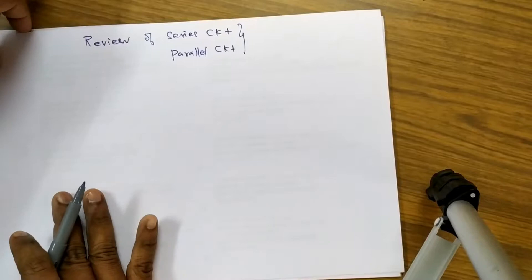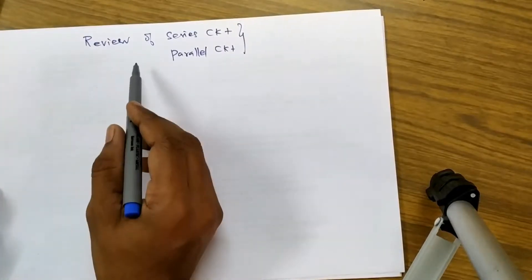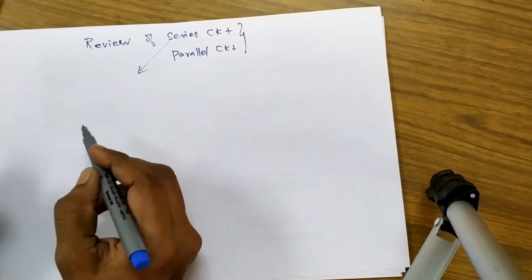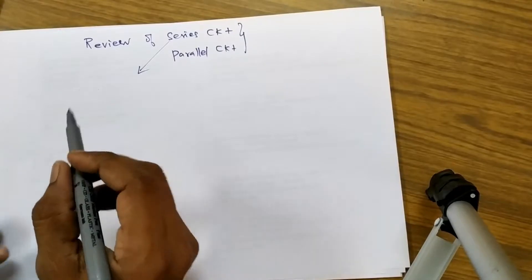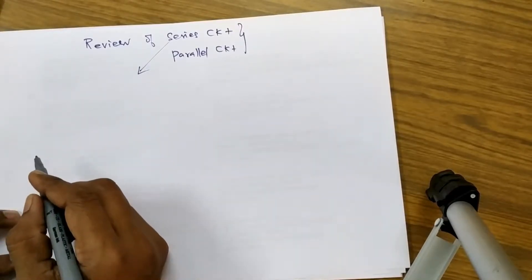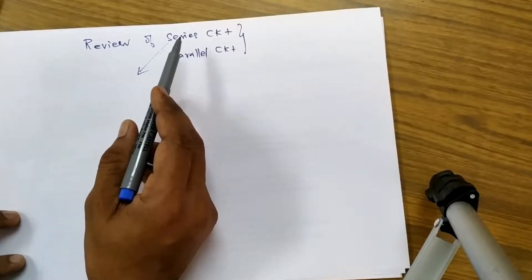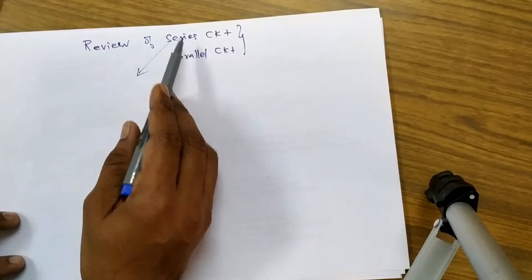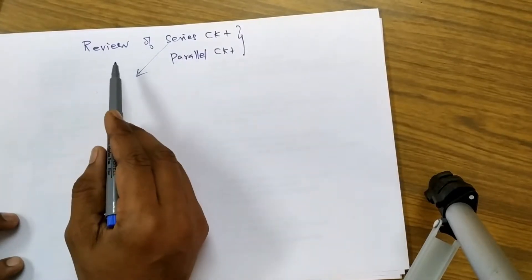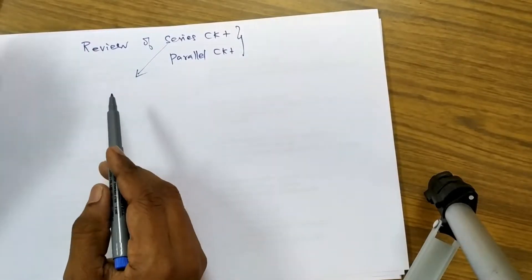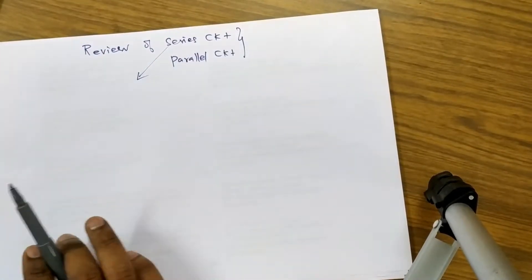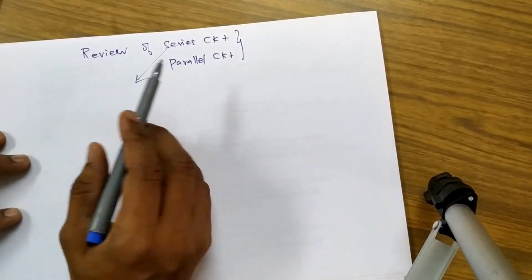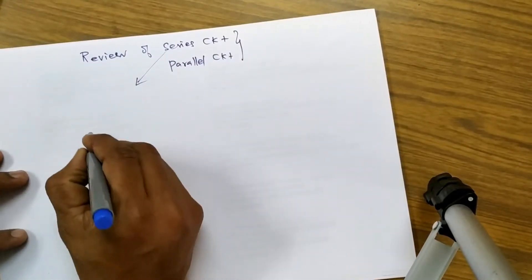This lecture will discuss a review of series circuits and parallel circuits. As I already mentioned, the description below has a link to another video explaining why there are different voltage drops in a series circuit and same current in a series circuit, and similarly why there is same voltage in a parallel circuit and different current in a parallel circuit. In this lecture we will take a quick review of how same current and different current occurs.